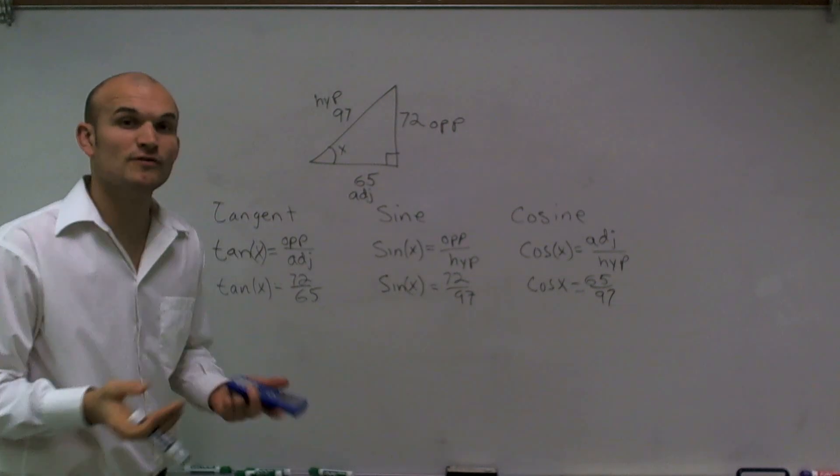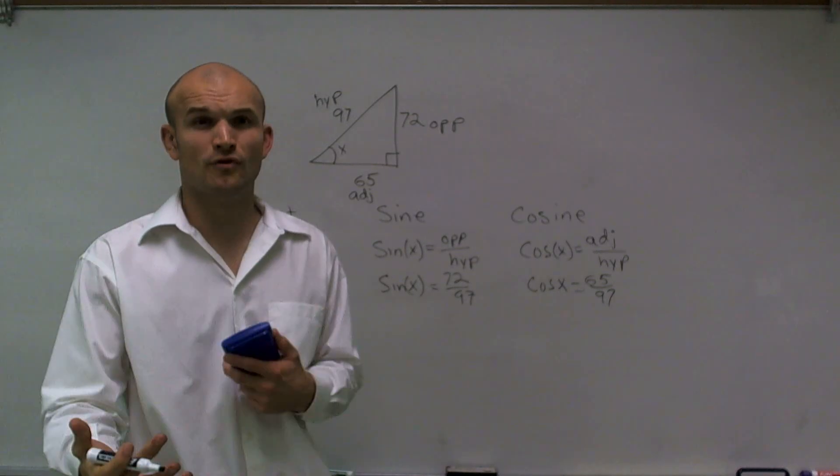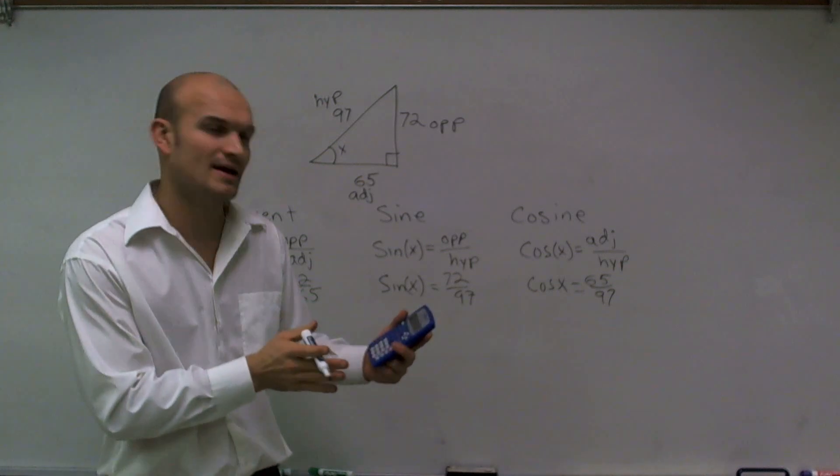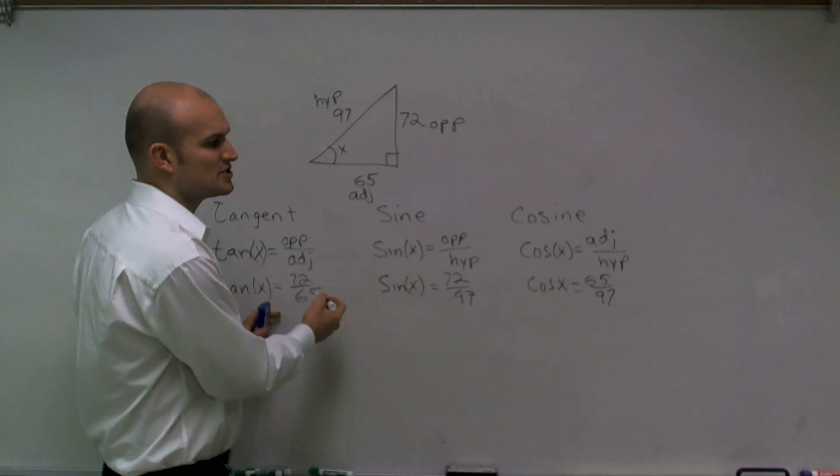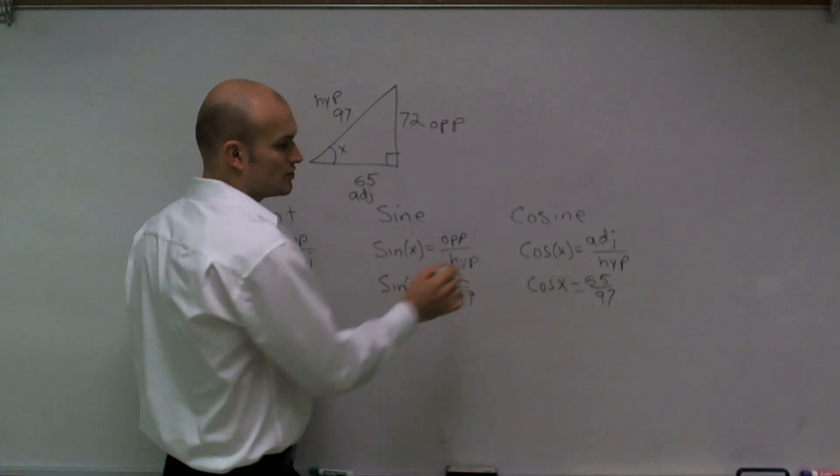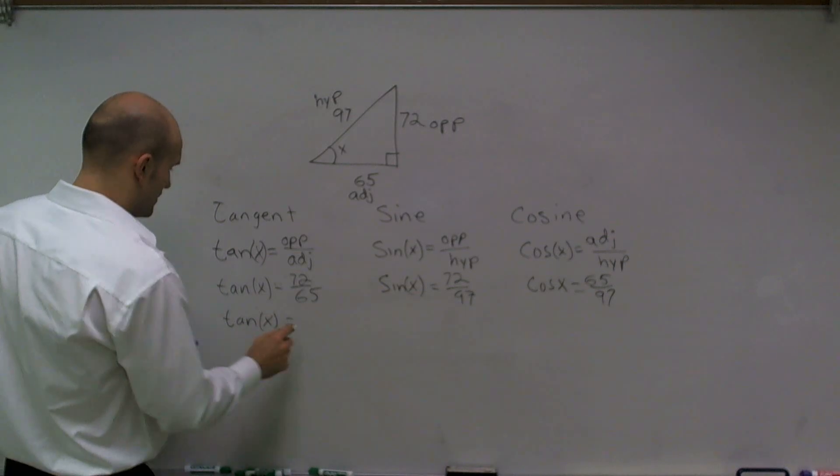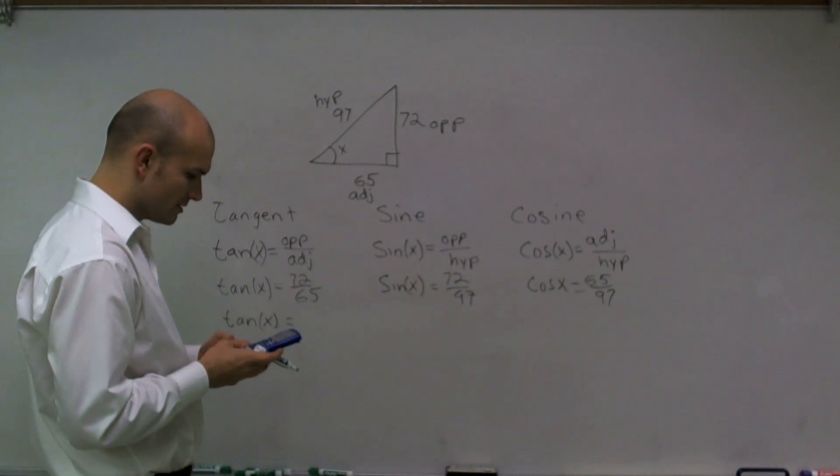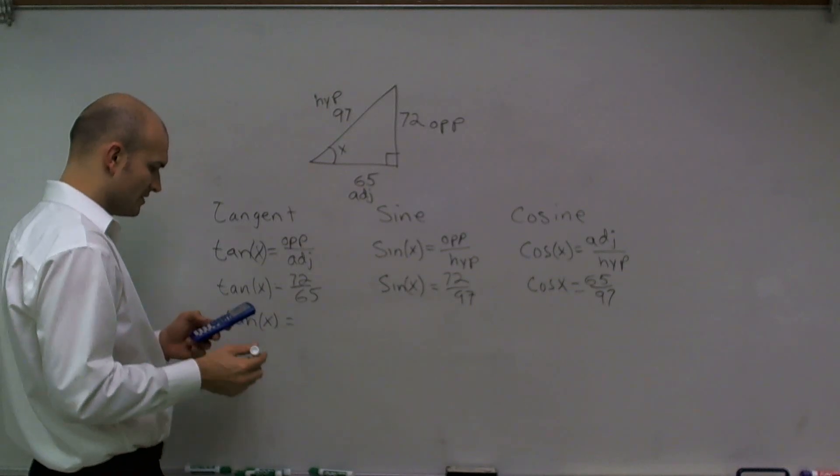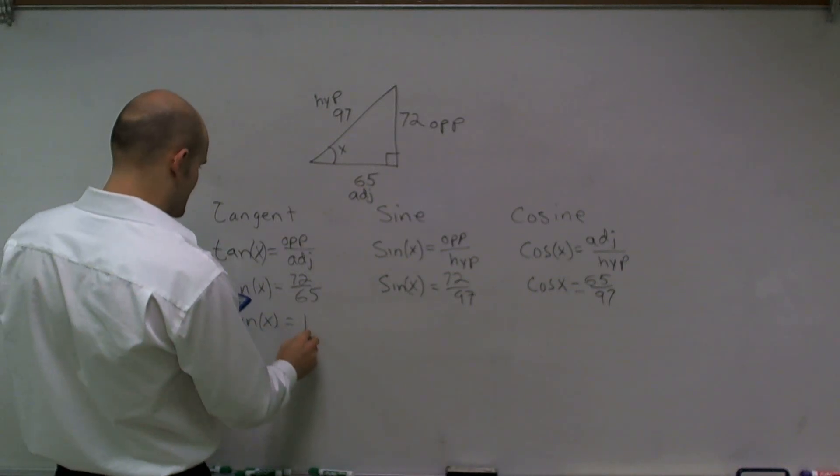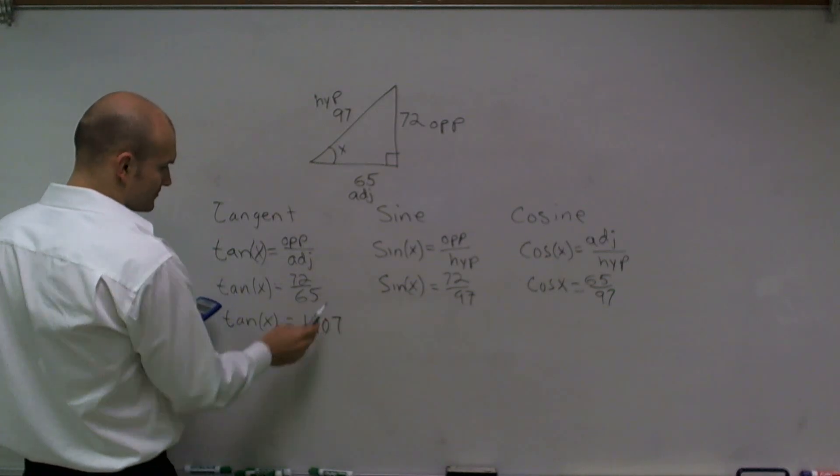It will be helpful for us to look at some of the decimals for these problems. When you're using the decimal, I want you to use the full decimal in your calculator. I don't want you to abbreviate. But I'm just going to write down a bit of abbreviation so you can understand that each one of these ratios are different. The tangent of x is 72 divided by 65, and I'm just going to abbreviate this: 1.107.